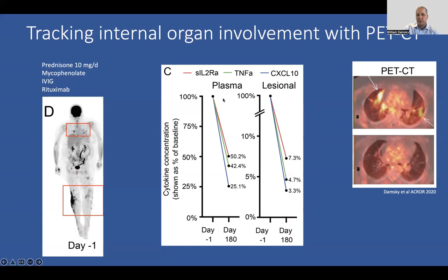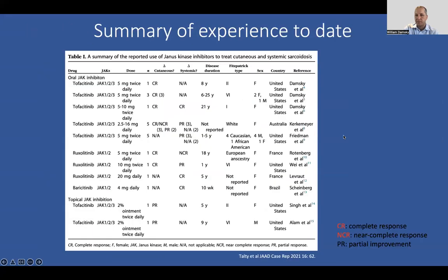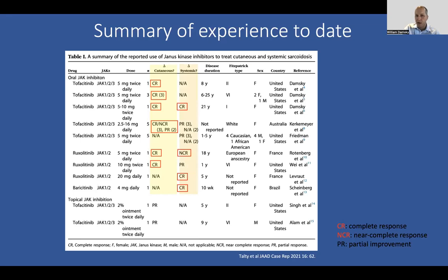That suggested there was some possibility JAK inhibitors could work for internal organ disease. We were able to collect plasma and lesional biopsy tissue and saw reduction in the activity of sarcoidosis biomarkers with therapy. It was really fun to see others around the world using this approach. These are all case reports and small case series — biased towards patients with better results — but we're seeing a lot of complete responses in the skin and near complete responses in the lung. Some patients actually responded to topical JAK inhibition as well.